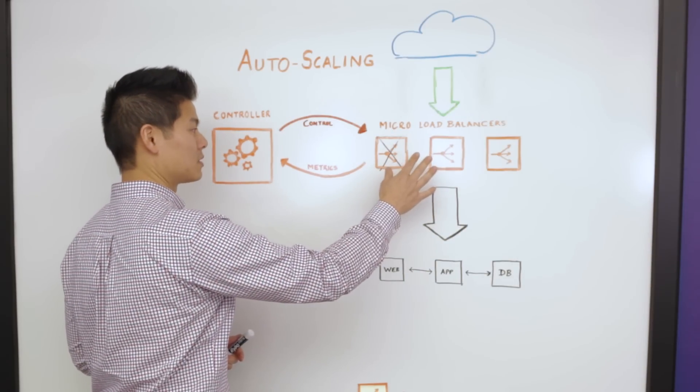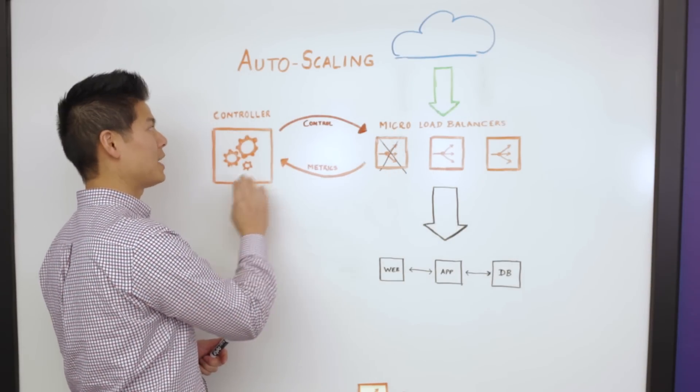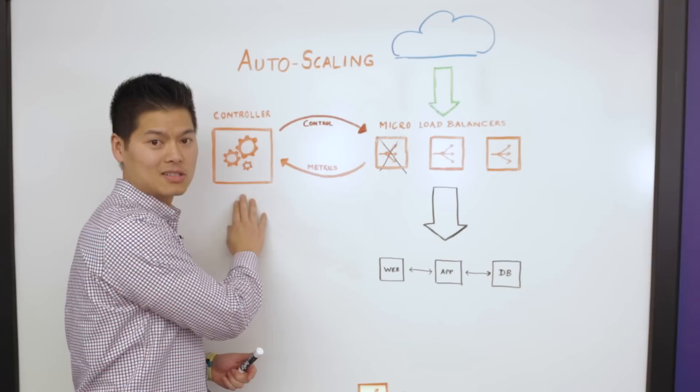In turn, the micro load balancers will feedback rich metrics back to the controller so it can make better decisions down the road.